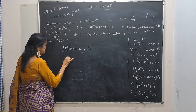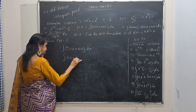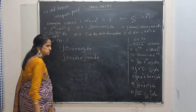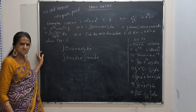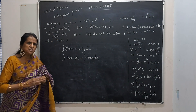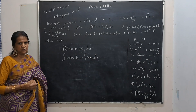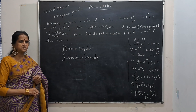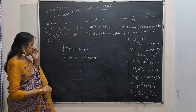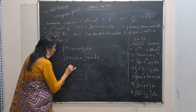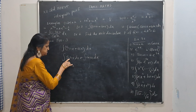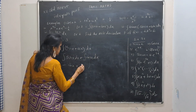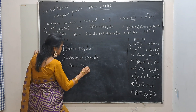Split it: integral of sin x dx plus integral of cos x dx. What function when you differentiate gives you sin x? If you say cos x, the derivative of cos x is minus sin x. So integral of sin x will be minus cos x. Differentiate this and you will get sin x. Plus this will be sin x plus c.